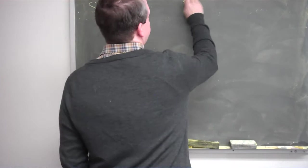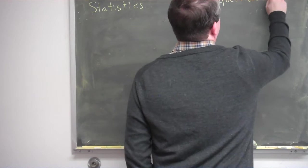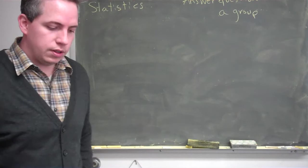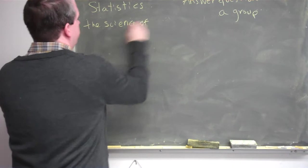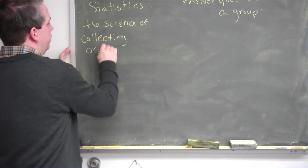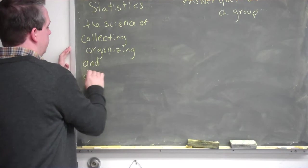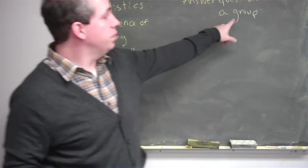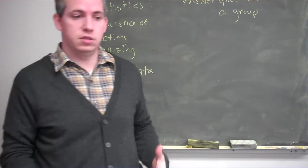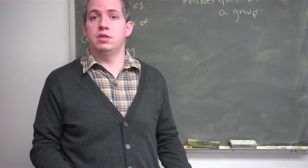So, there's our goal. Technically speaking, statistics is the science of collecting, organizing, and describing data. But truly, what we want to do is we want to answer a question about a group. That group that we want the question to be answered about is what we call our population. Usually we start out with a question about a population of people or things, and our goal is to try to answer that question the best that we possibly can.